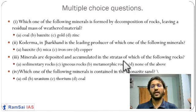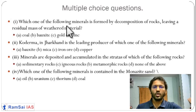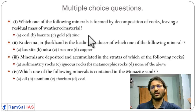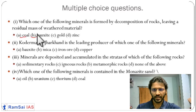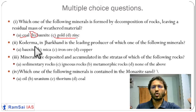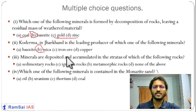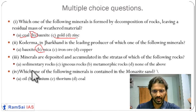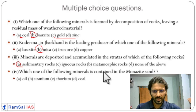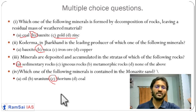Now let us look at some MCQs. Which mineral is formed by decomposition of rock, leaving a residual mass of weathered material? Answer: Bauxite. Koderma in Jharkhand is the leading producer of which mineral? Answer: Mica. Minerals are deposited and accumulated in strata — in which type of rock? Answer: Sedimentary rock. Which mineral is contained in monazite sand? Answer: Thorium. If you have any doubts, please ask on Telegram. Thank you.